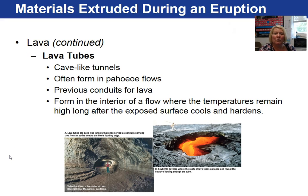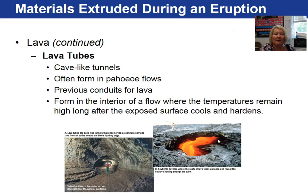Lava tubes form commonly in basaltic lava eruptions. They are cave-like tunnels and actually form in pahoehoe flows, often times. They are previous conduits that the lava escaped from. Here, this person is standing in a lava tube — it is cave-like in appearance and used to carry lava from an active vent to the flow's leading edge. Here is another view of a lava tube where lava is actively flowing through.